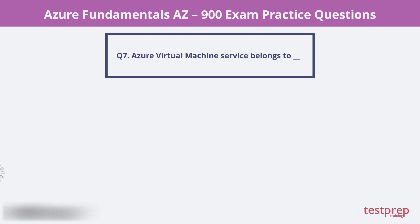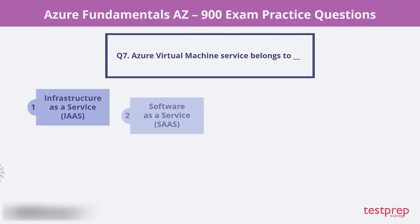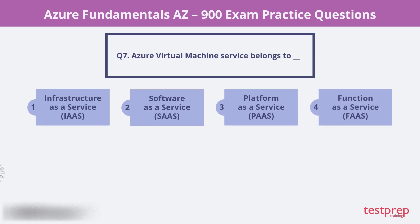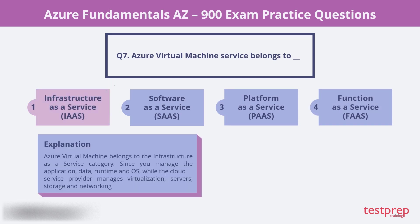Question 7. Which of the following cloud service category does Azure Virtual Machine service belong to? Is it Infrastructure as a Service, Software as a Service, Platform as a Service, or Function as a Service? Azure Virtual Machine belongs to the Infrastructure as a Service category, since you manage the application, data, runtime and OS, while the cloud service provider manages virtualization, servers, storage and networking.